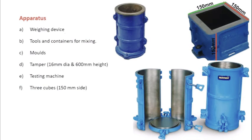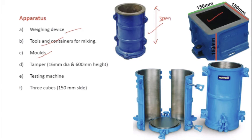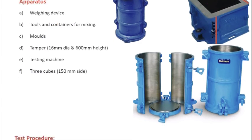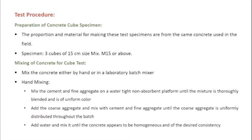The apparatus needed includes a weighing device for ingredients, tools and containers for mixing, a non-absorbent surface to mix the concrete, molds for cylindrical specimens (300 mm height, 150 mm diameter) and cubic specimens, a tamper rod, and a compression testing machine (CTM). Three cubes are to be cast in this particular mold.